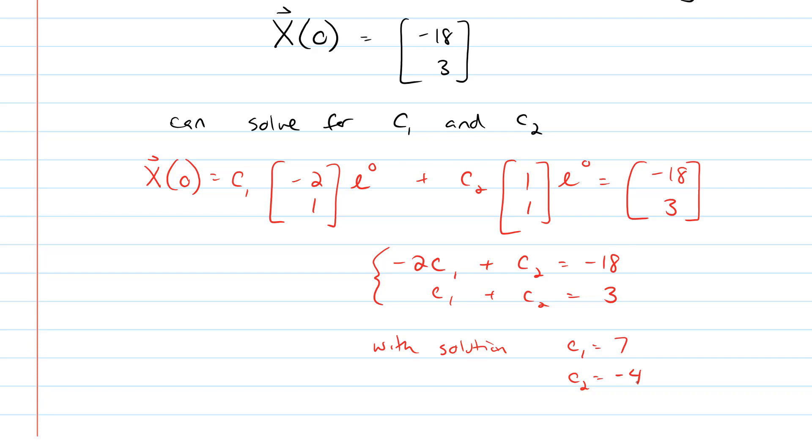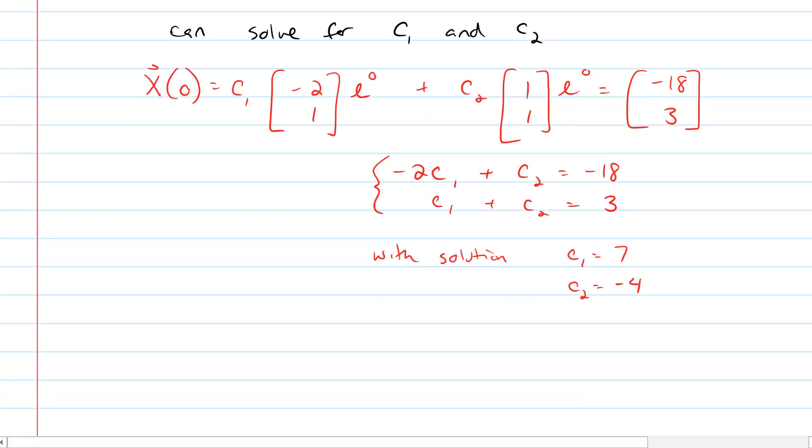And then let me just turn the page on my solution to make sure that I don't screw this up. Then I get capital X equals, when I put in the 7 for c1 and then multiply it through, I get negative 14 and 7 as my column vector onto the e to the t, plus 4 and 4 e to the 4t. And there we are.